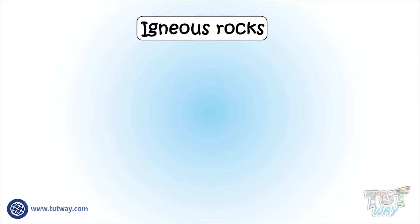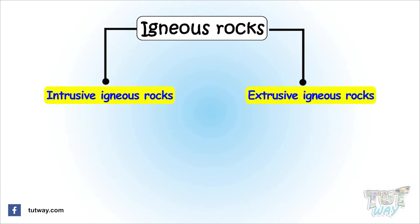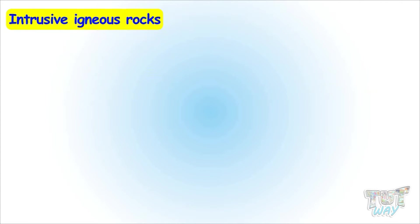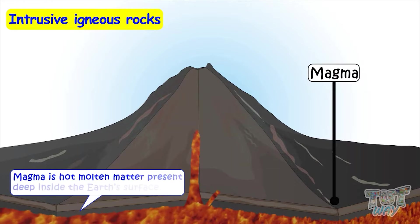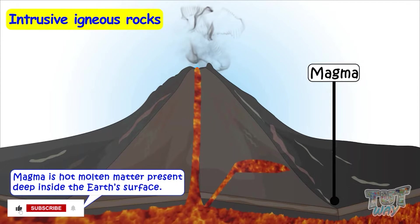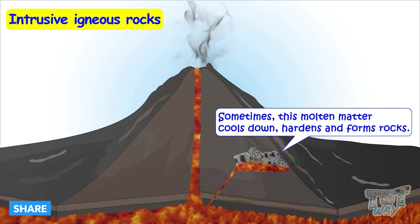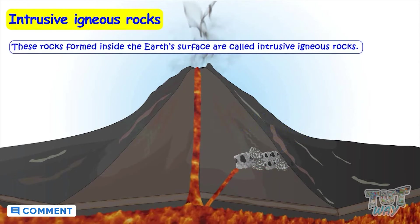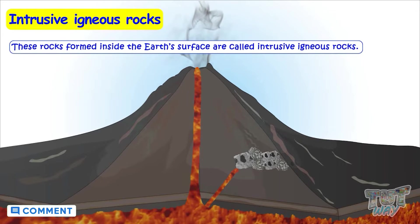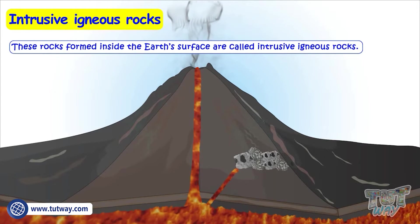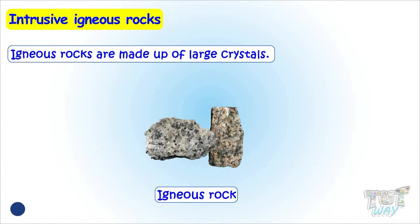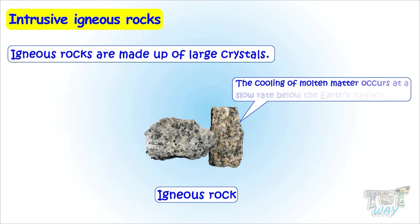Igneous rocks. Igneous rocks are of two types: intrusive igneous rocks and extrusive igneous rocks. Let's first learn what intrusive igneous rocks are. There is magma, which is hot molten matter present deep inside the Earth's surface. Sometimes this molten matter cools down, hardens, and forms rocks. These rocks formed inside the Earth's surface are called intrusive igneous rocks. Igneous rocks are made up of large crystals because the cooling of molten matter occurs at a slow rate below the Earth's surface.